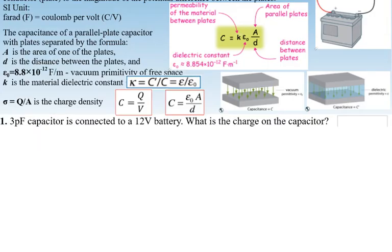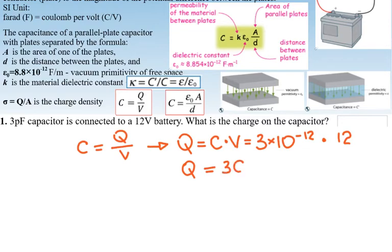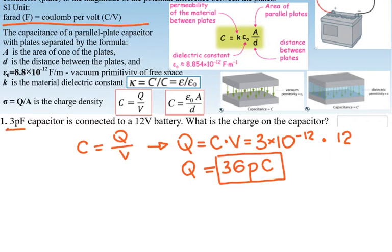AP exams usually have quite a few questions on capacitors. First example: a 3 picofarad capacitor (pico = 10⁻¹²) is connected to a 12-volt battery. What is the charge on the capacitor? Using C = Q/V, charge equals capacitance times voltage: 3 × 10⁻¹² times 12 equals 36 picocoulombs. Capacitance is measured in farads and charge is measured in coulombs.